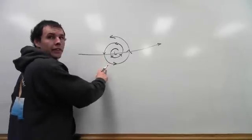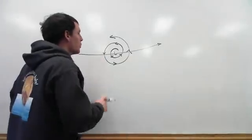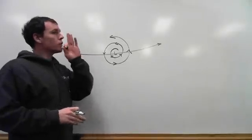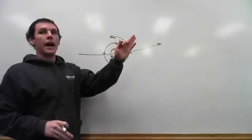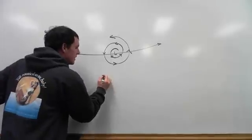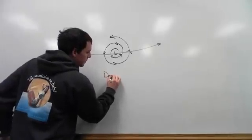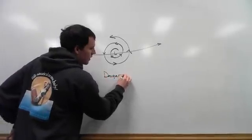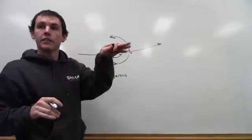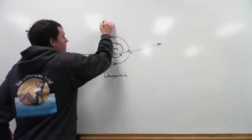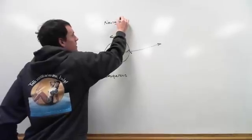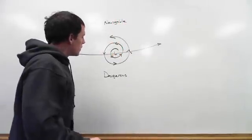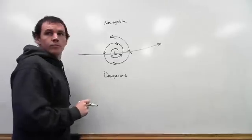South of the path of the center of the low here, or another way they state it, if you are looking in the path, to the right is the dangerous semicircle. And to the left of the path of the center of the low is the navigable semicircle.